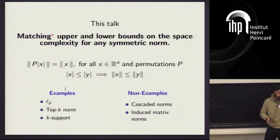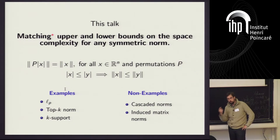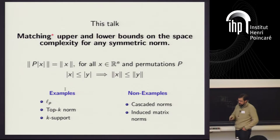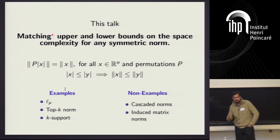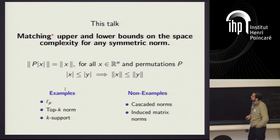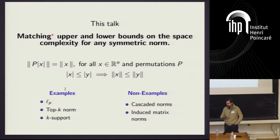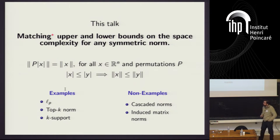What I mean by a symmetric norm is the norm is invariant under permutations of the coordinates — LP norms have this property — and also invariant under taking absolute values or sign changes to the coordinates. One important property of symmetric norms that we're going to use a lot is monotonicity. If I have two vectors x and y that satisfy a coordinate-wise order, then the norms also respect the order. This allows us to translate an approximation to a vector, coordinate-wise, to an approximation to the norm.